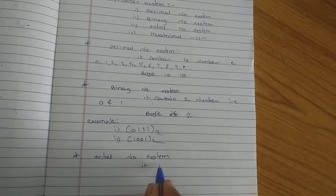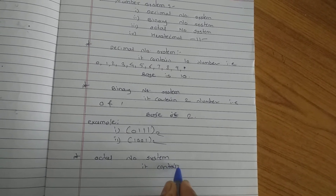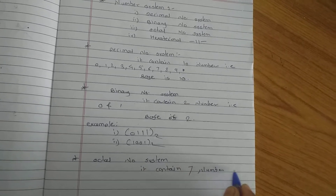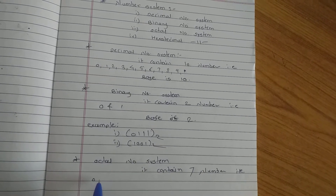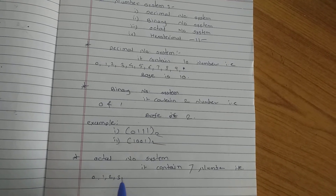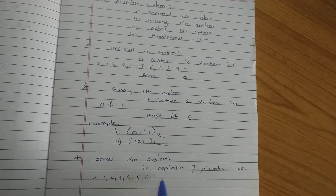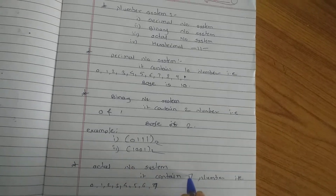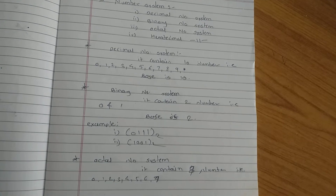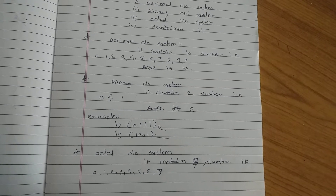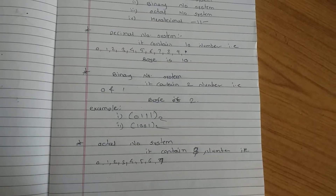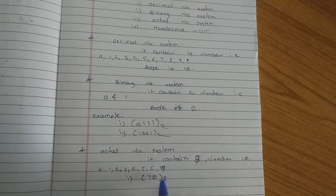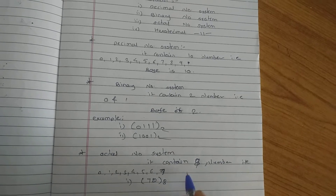Then the octal number system — it contains eight numbers, that is zero, one, two, three, four, five, six, seven. So it contains eight numbers, from zero to seven. An example would be 70 with base 8.